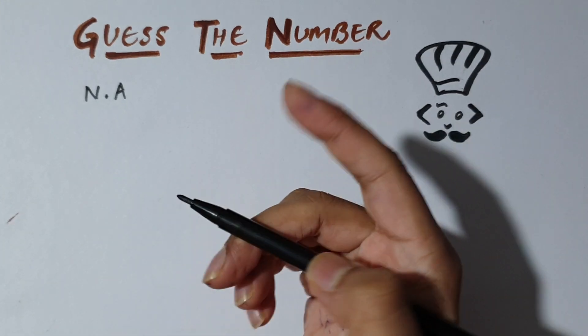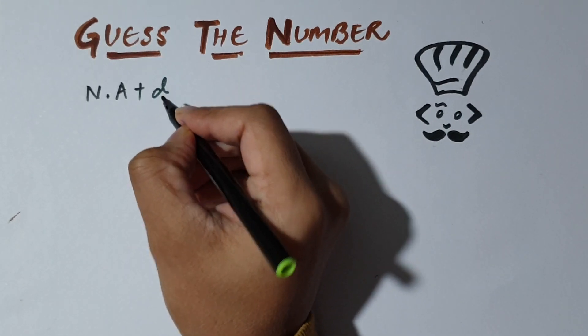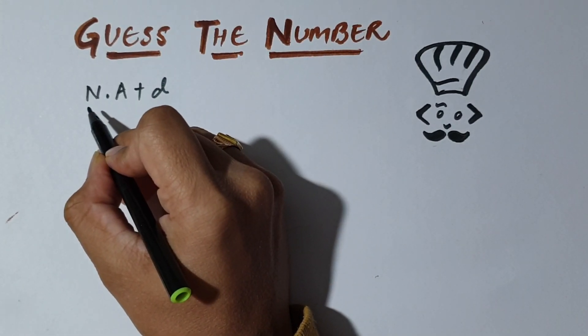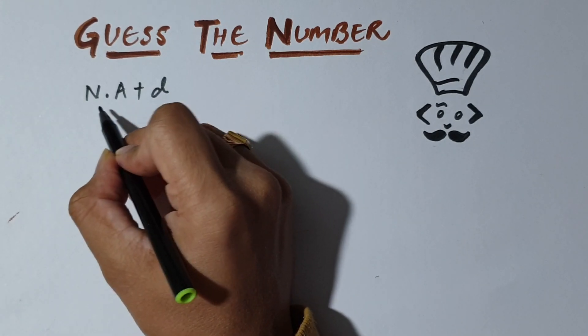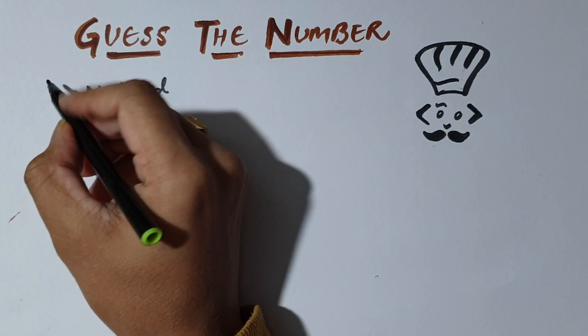And then to this product, he asks Chefu to choose a number d and add it to this product. And d is a number such that d is a divisor of N. That is d divides N completely. So this is the number that Chefu has in his mind right now.